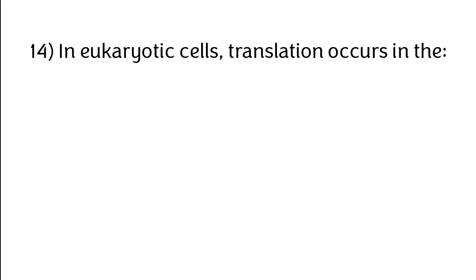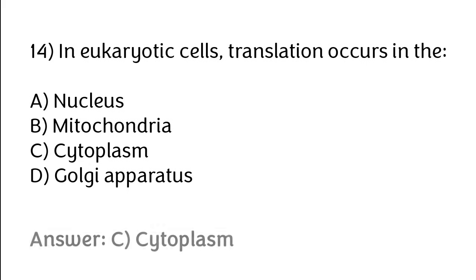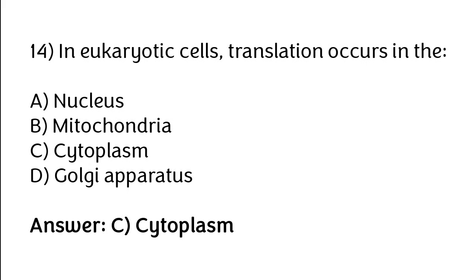In eukaryotic cells, translation occurs where? Options: nucleus, mitochondria, cytoplasm, Golgi apparatus. The correct answer is option C — in eukaryotic cells, translation occurs in the cytoplasm.